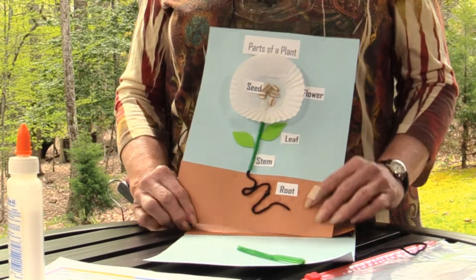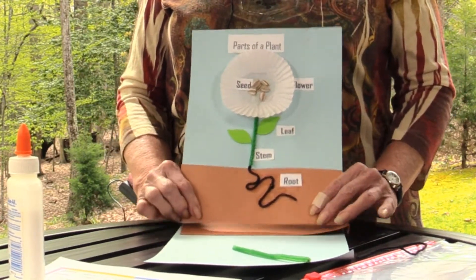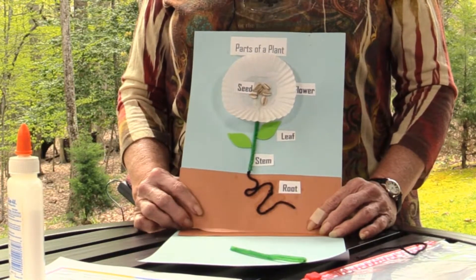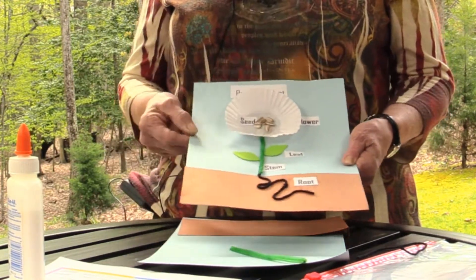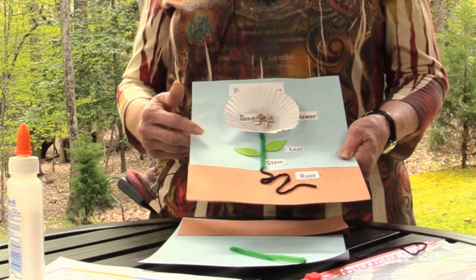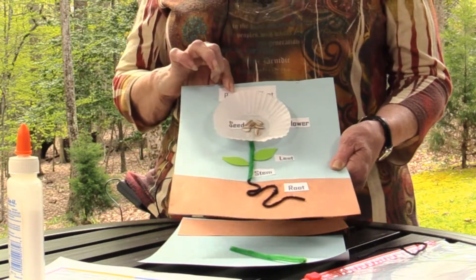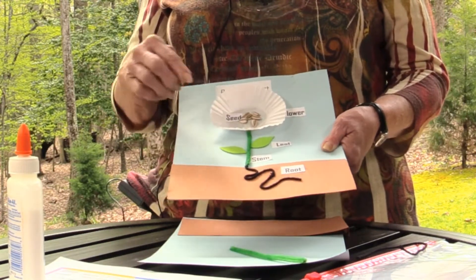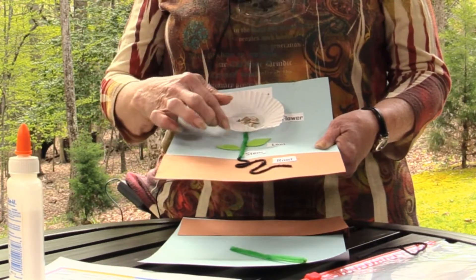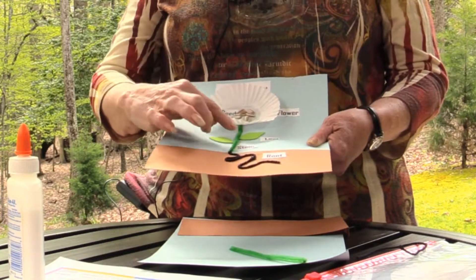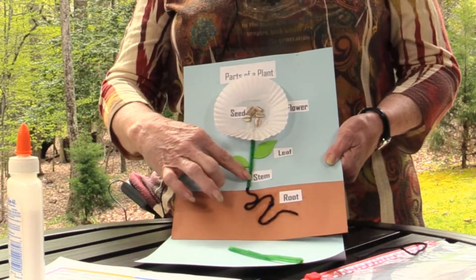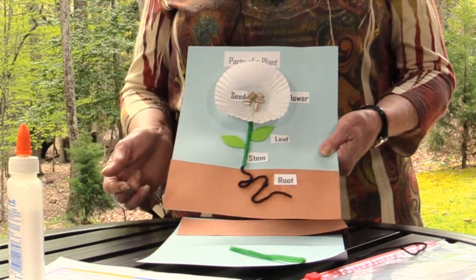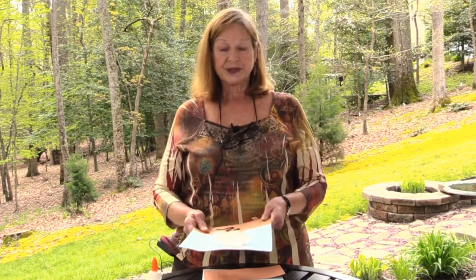Today I'll be demonstrating how to make a 3D version of the parts of a plant. In your kit you will have paper, blue and brown, labels, a cupcake liner, seeds, green leaves, a pipe cleaner and yarn. Shall we get started?